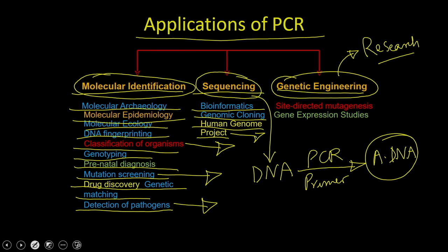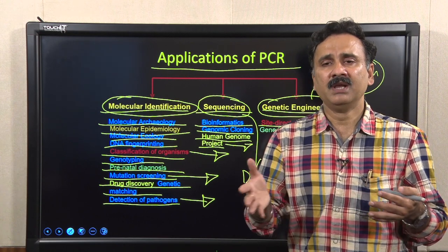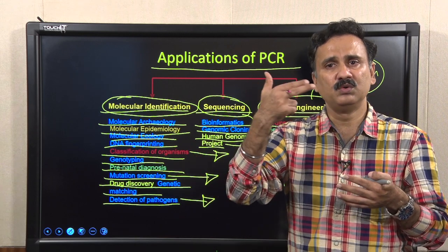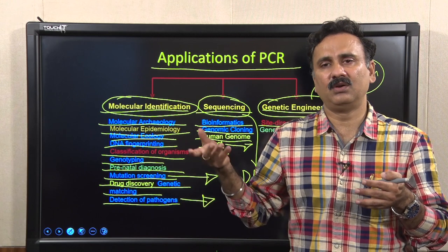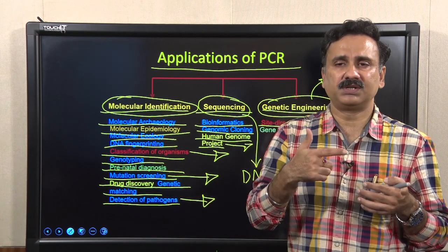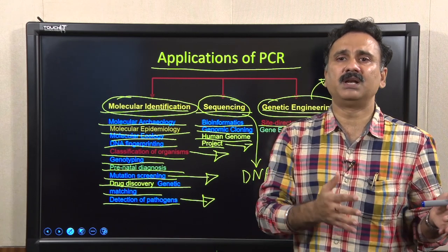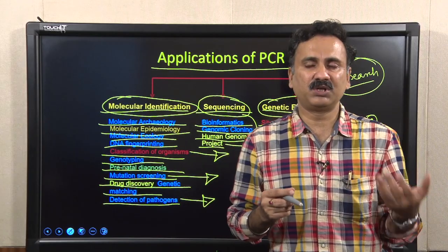In genetic engineering and research, PCR is widely used for two purposes. First, for generating site-directed mutagenesis — you can precisely generate a point mutation in a particular gene. For example, if an enzyme has an aspartate residue that is crucial, you can use PCR to introduce a point mutation replacing aspartate with alanine or glycine, and answer whether that residue is critical for a particular activity. Second, PCR is used for gene expression studies to monitor the expression of a particular gene.